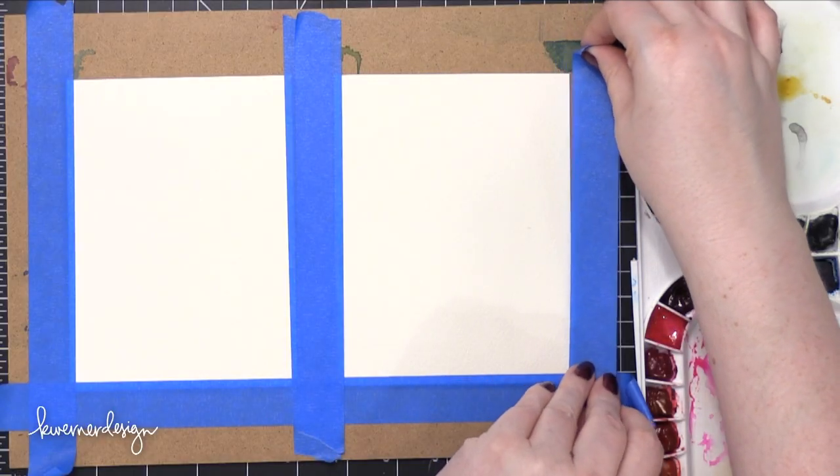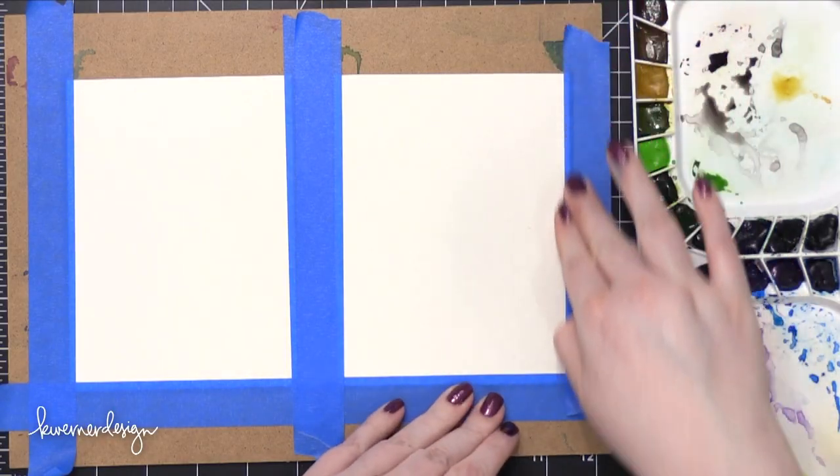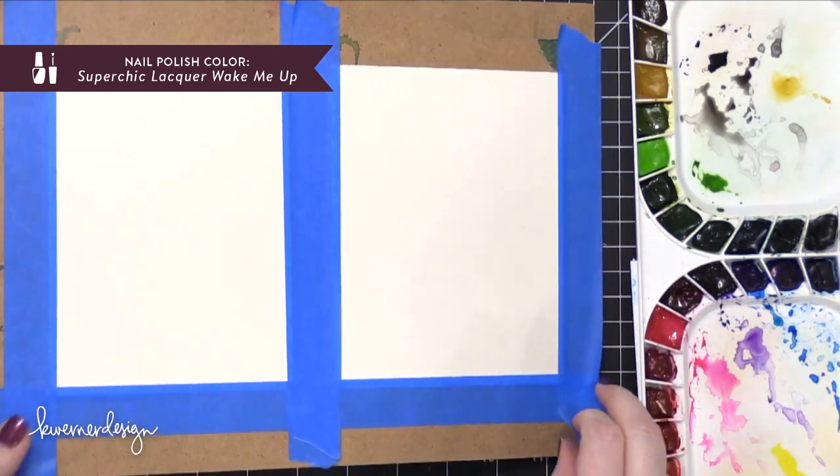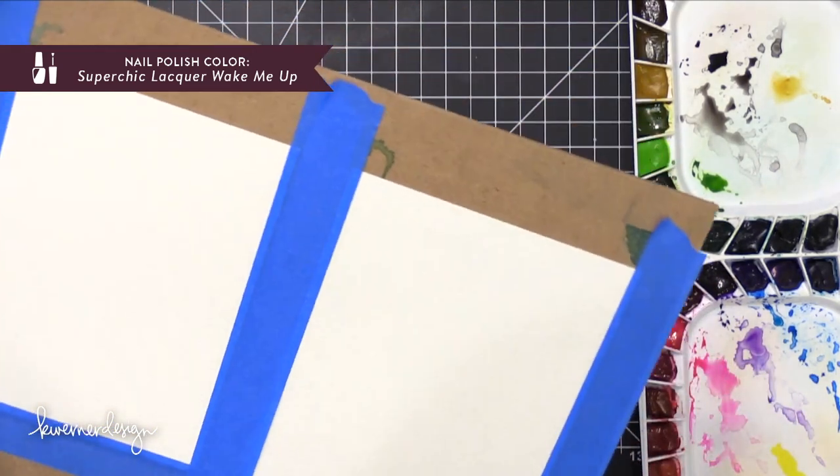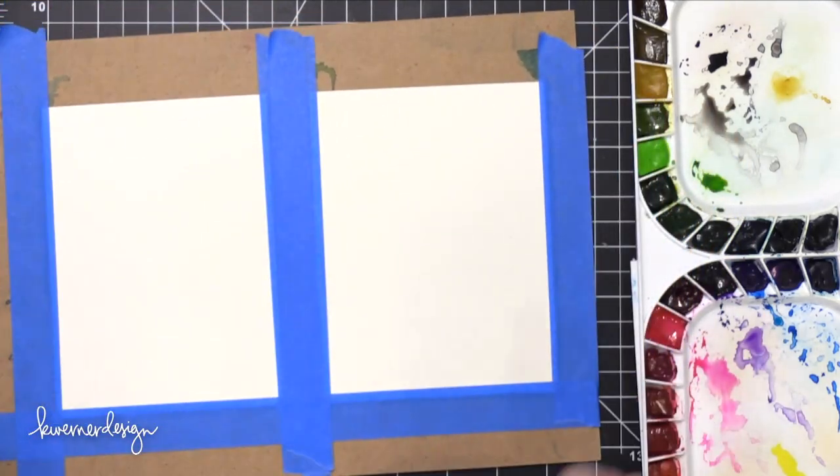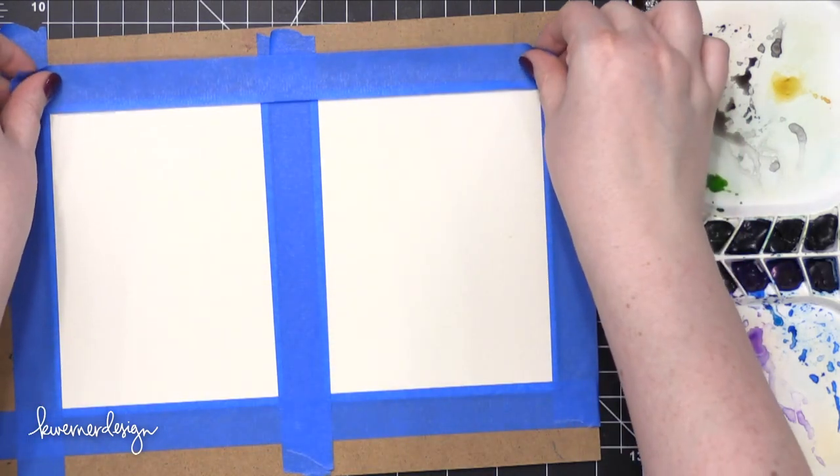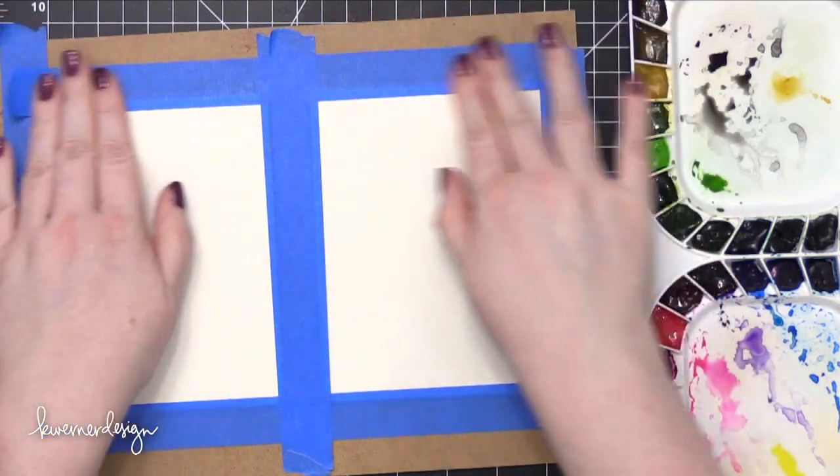The first technique I'm going to be showing you could sometimes be called an ombre technique. That might be what you're more familiar with when you see this particular style. So I'm going to walk you through two different ways to do it. The first is going from one color faded out to white or to a very pale shade of that color. And then I'm going to show you an example using multiple colors and we're going to make a rainbow background.